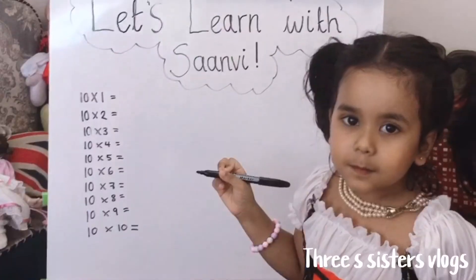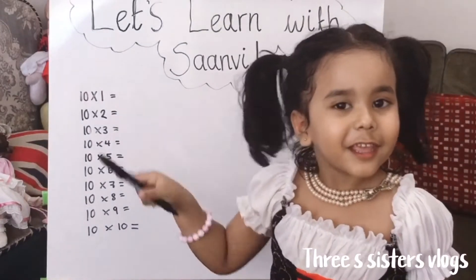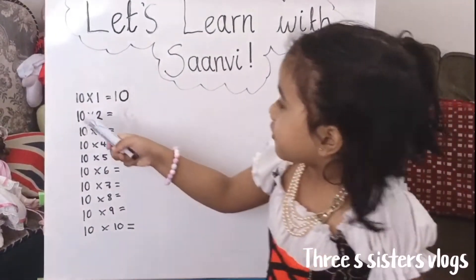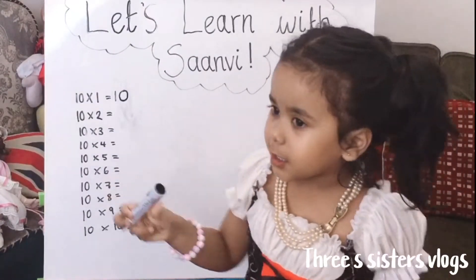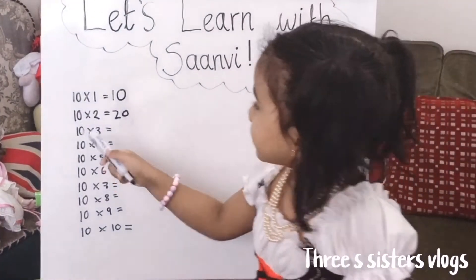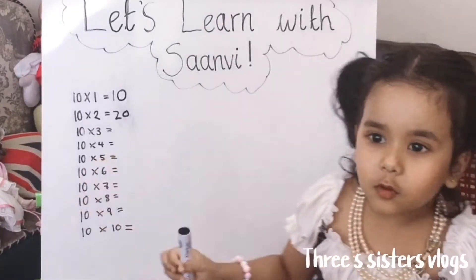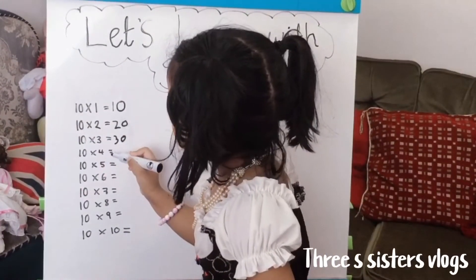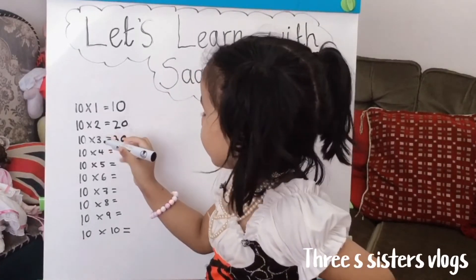Let's get started. 10 times 1 equals 10 because 0 plus 10 equals 10. So 10 times 2 equals 20 because 10 plus 10 equals 20. So we write 20. 10 times 3 equals 30 because 20 plus 10 equals 30. 10 times 4 equals 40 because 30 plus 10 equals 40.